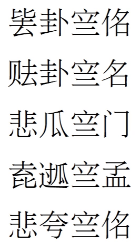Sawndip is made up of a combination of Chinese characters, Chinese-like characters, and other symbols. Like Chinese, it can be written horizontally from left to right, or vertically from right to left. The script has never been standardized; some morphosyllables have more than a dozen associated variant glyphs.